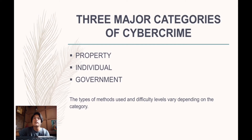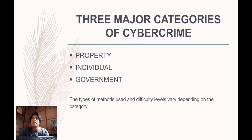They could also use malicious software to gain access to a web page with confidential information. Next is individual. This category of cybercrime involves one individual distributing malicious or illegal information online. This can include cyberstalking, distributing pornography, and trafficking.